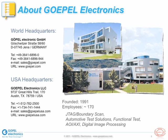Worldwide, we partner with a number of companies who provide technical and sales support to our customers. Gopal has five business units: JTAG boundary scan, automotive test solutions, functional test systems, automated optical and x-ray inspection systems, and digital image processing.